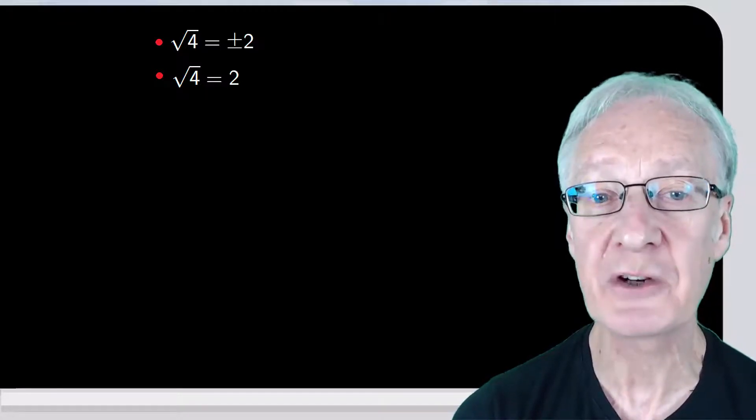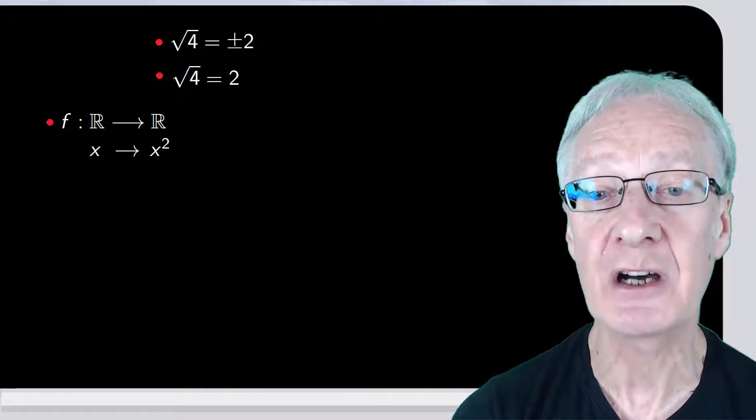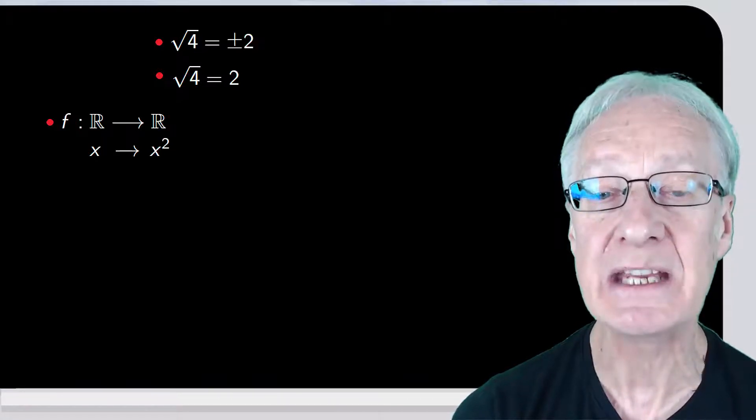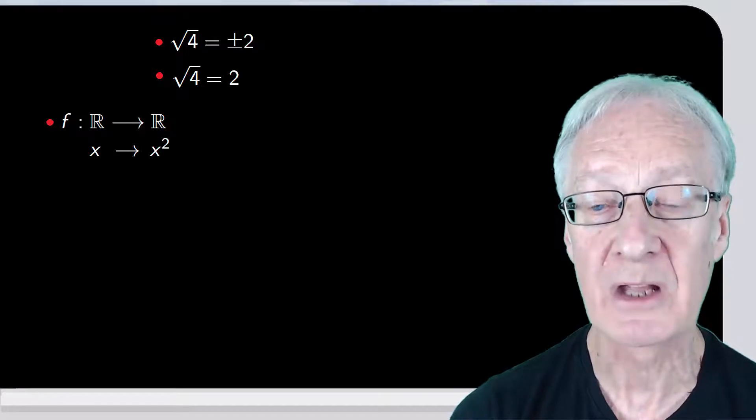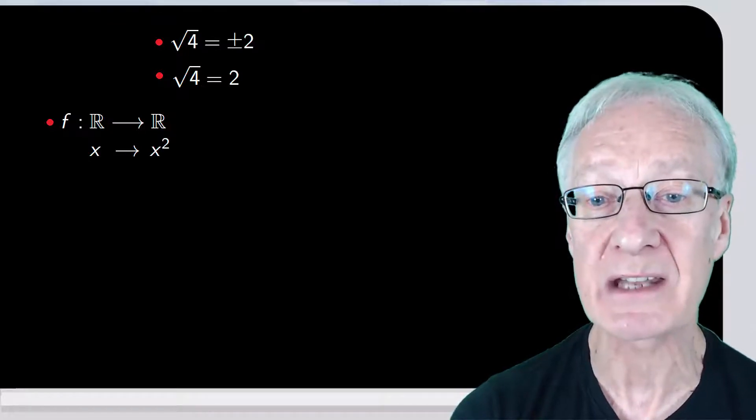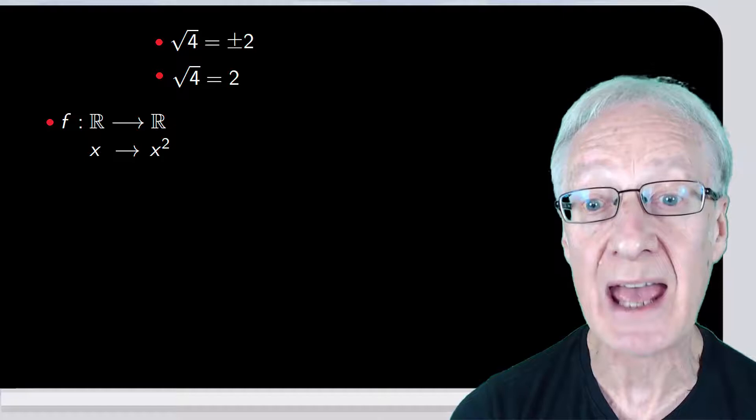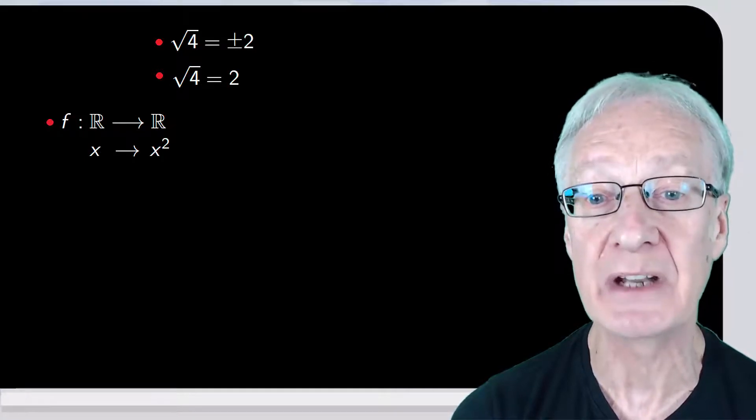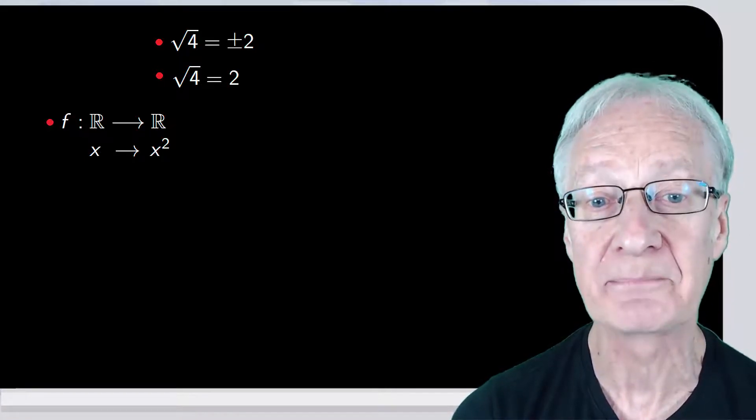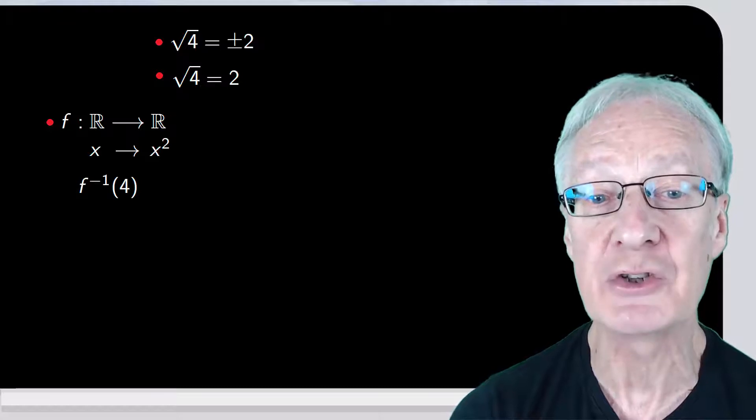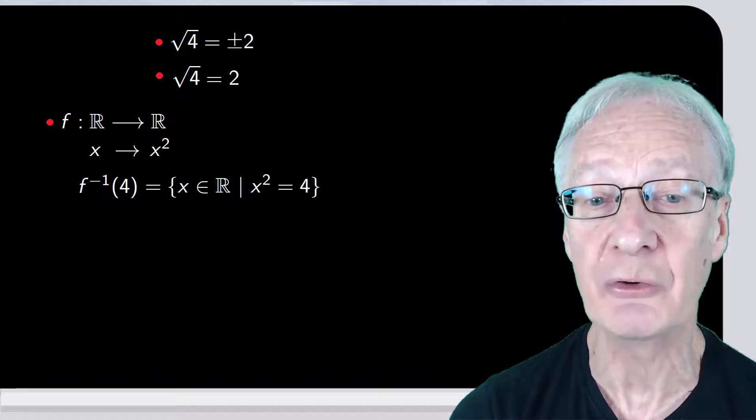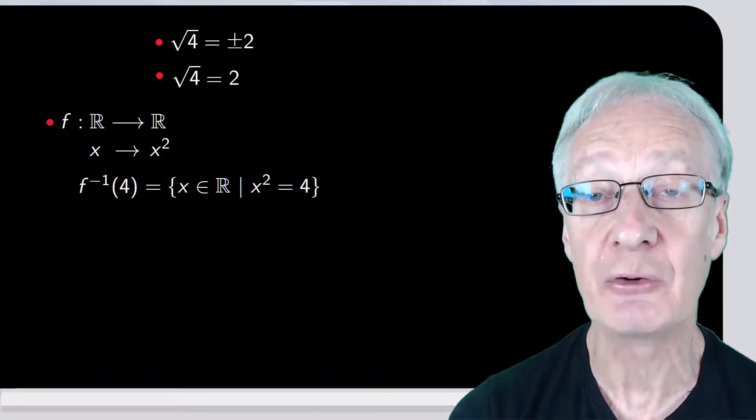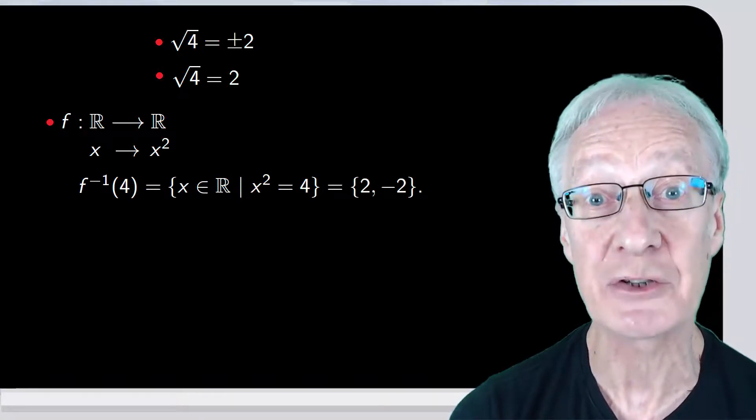For this, we consider the function f defined from r to r such that we make each real number correspond to that number squared. For any given function between sets, we can consider the anti-image set of an element of the codomain. For example, the anti-image of 4 are those real numbers such that when we square them, we obtain 4. This is the set formed by 2 and minus 2.